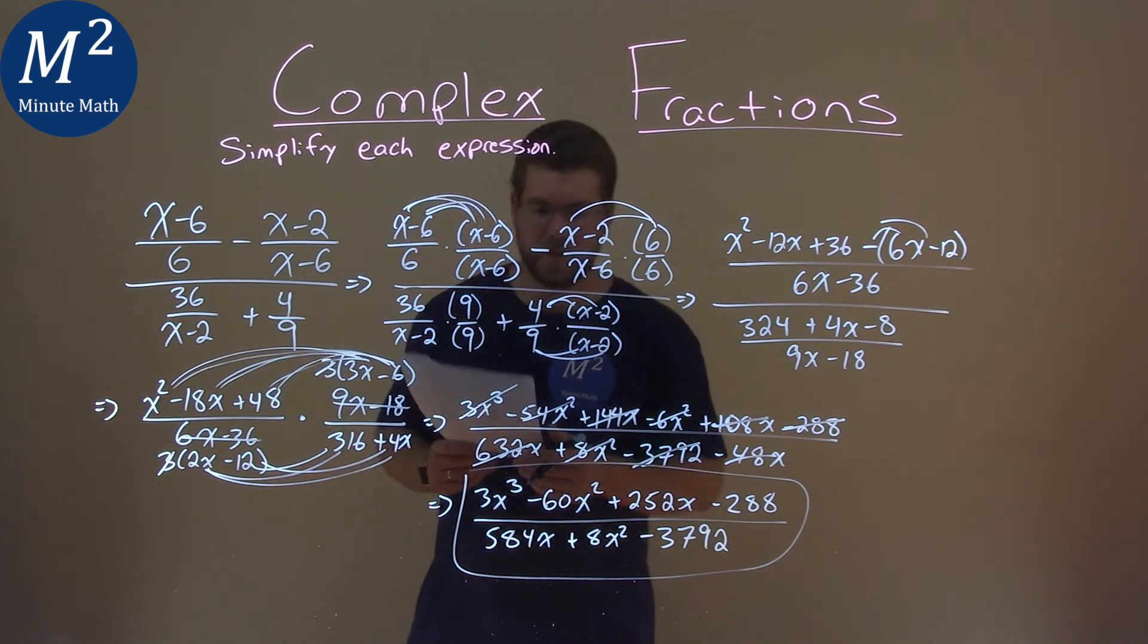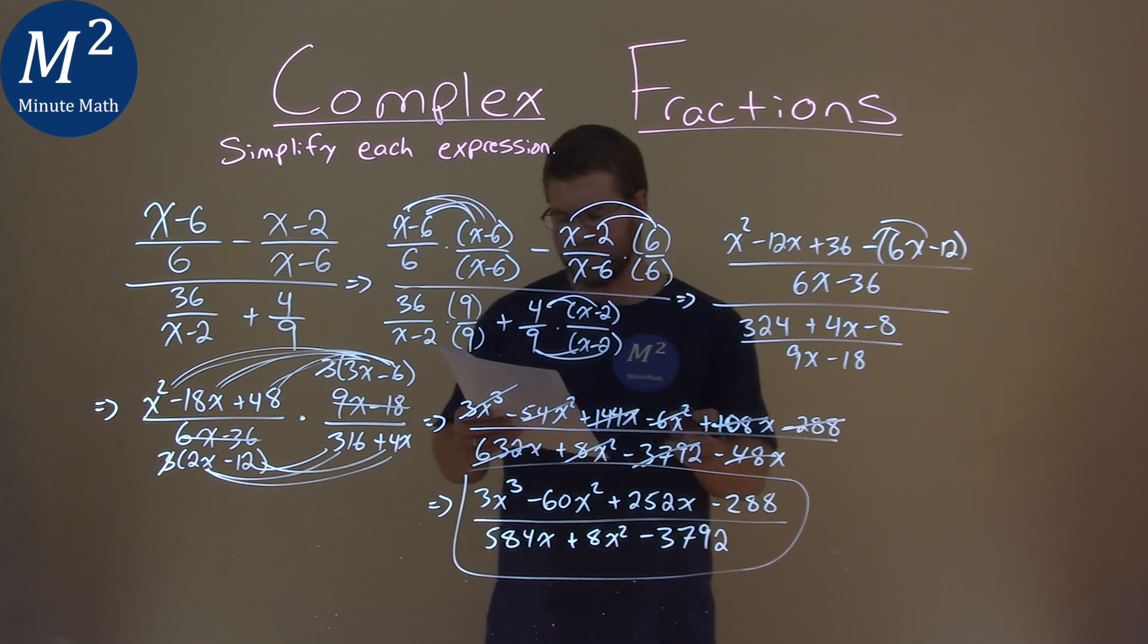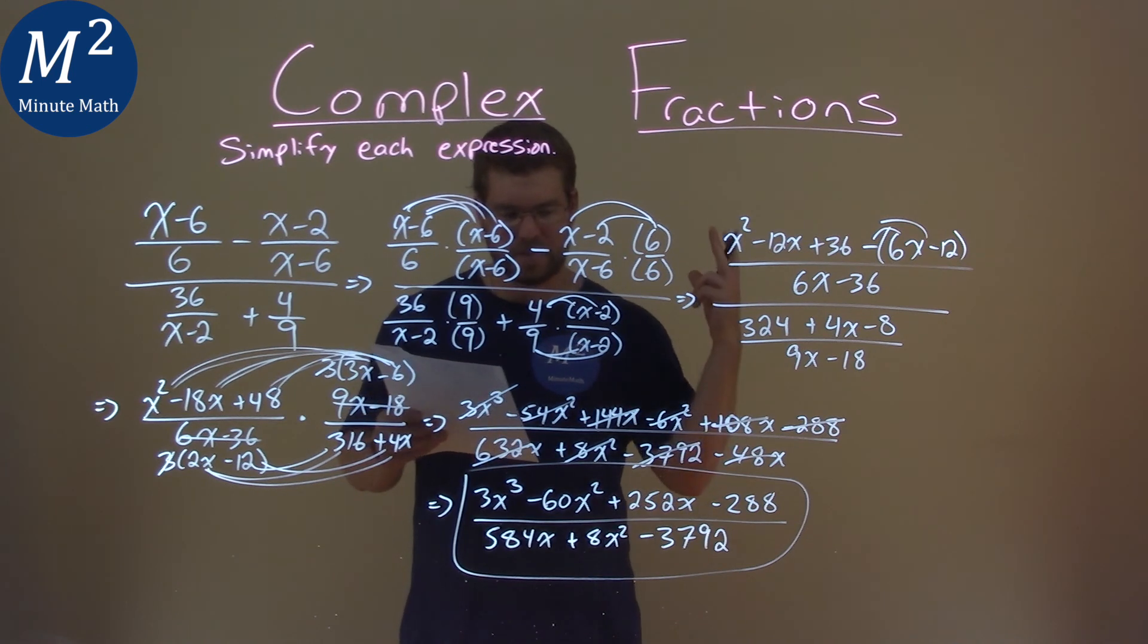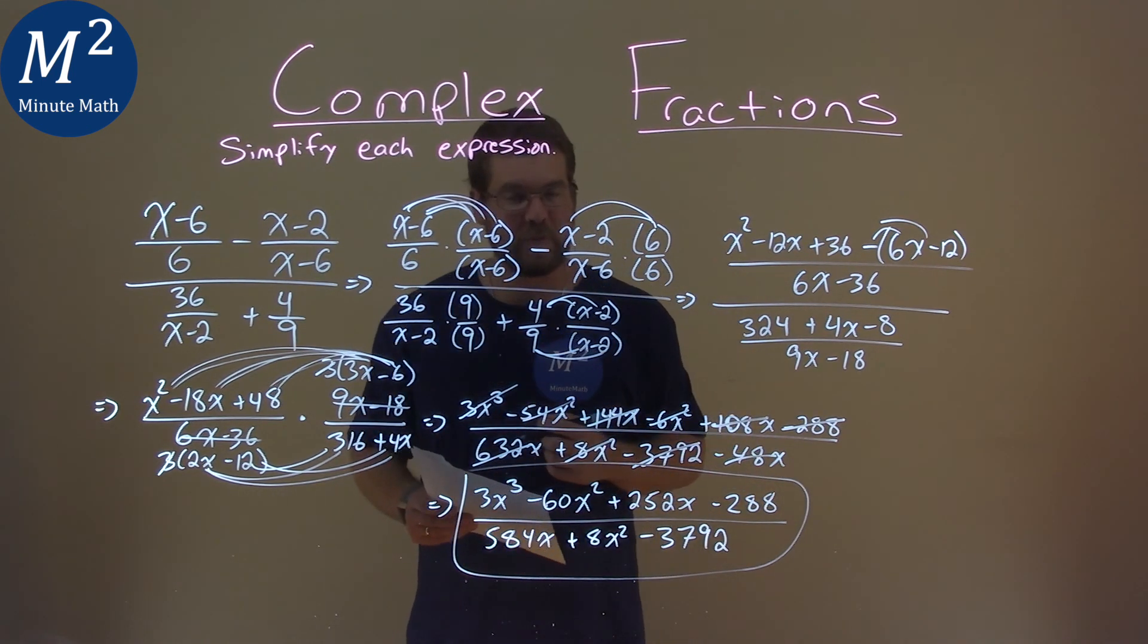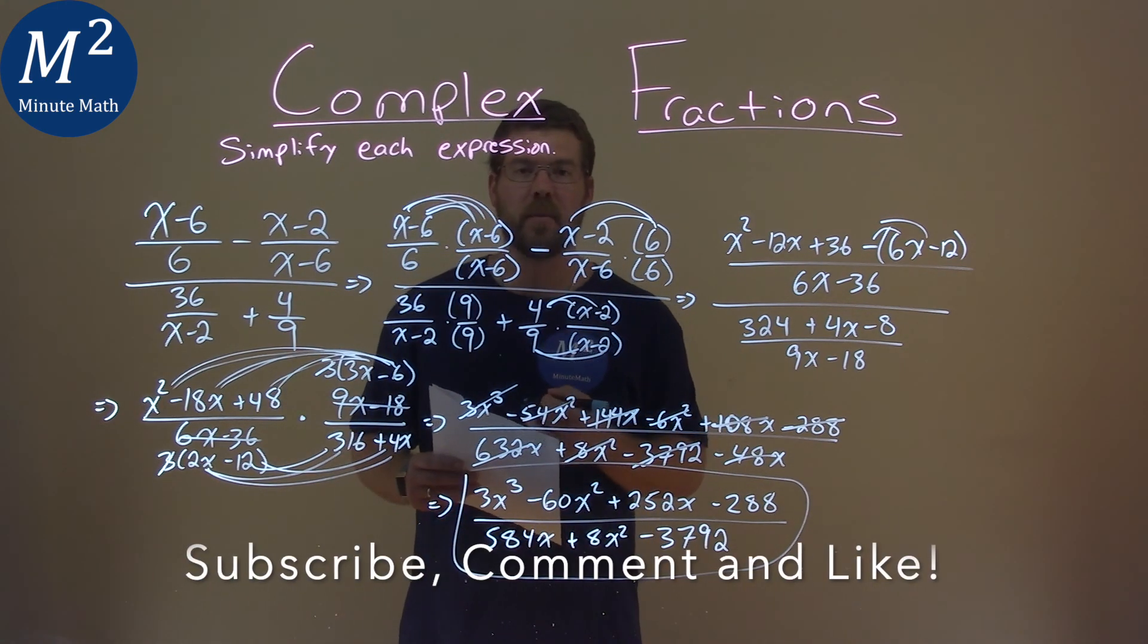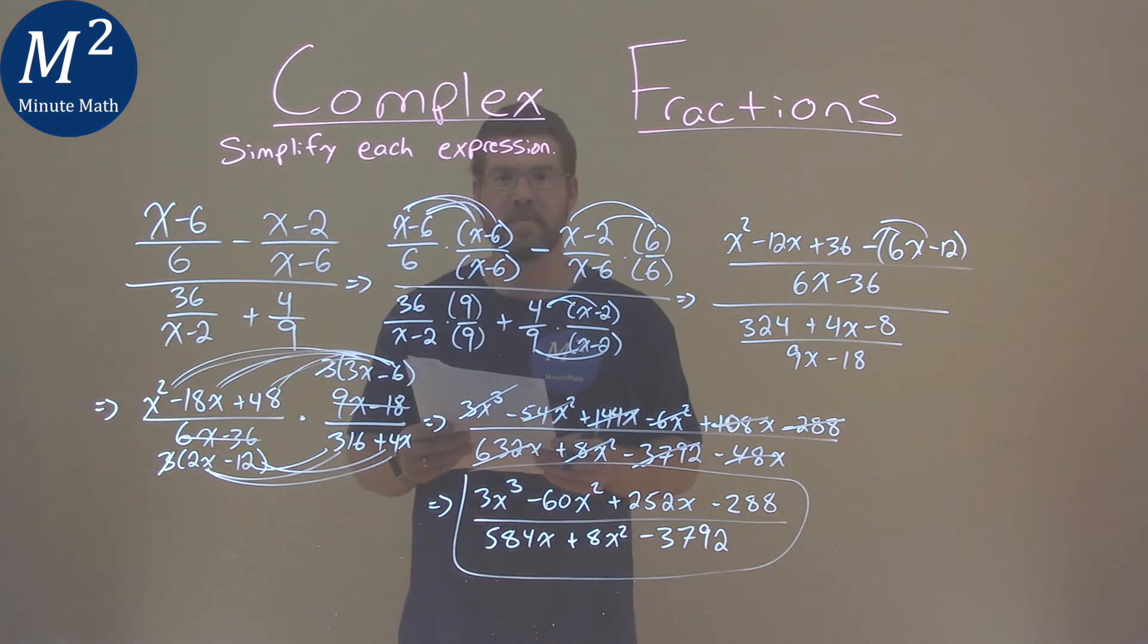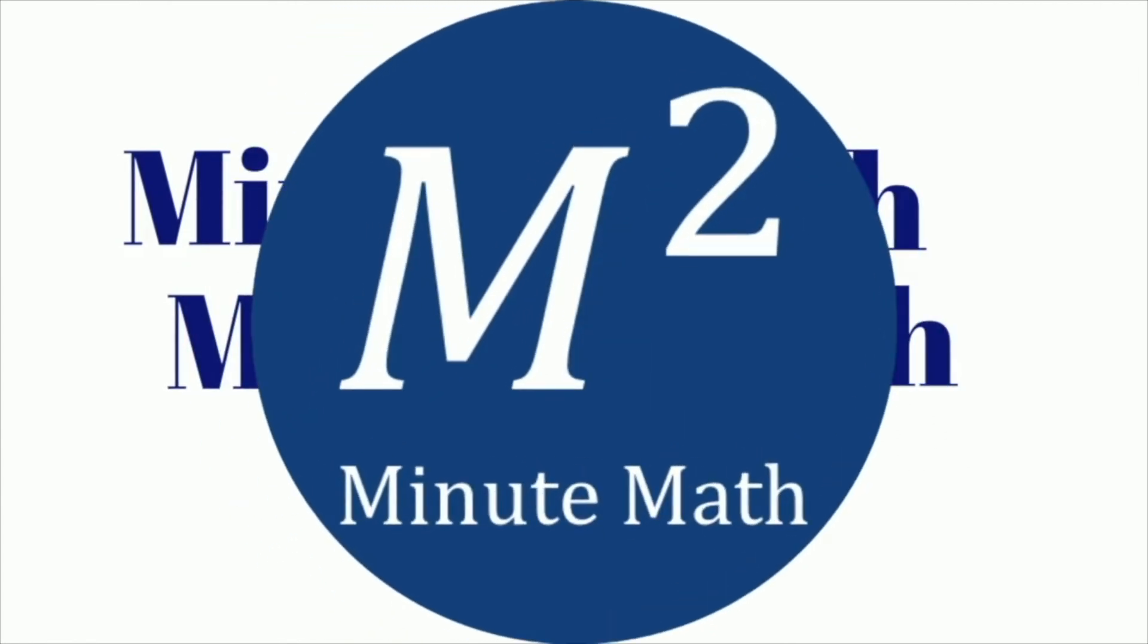And our final answer is 3x to the third minus 60x squared plus 252x minus 288 over 584x plus 8x squared minus 3792. I hope this video is helpful for you. And if it was, please subscribe to this YouTube channel and like this video. This helps us make more free math lessons for you and for everyone else. So, as always, thanks for watching. Minute Math. Minute Math. When you need help you use Minute Math.